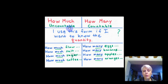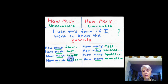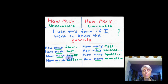For uncountable nouns, to ask a question I say: how much flour have you got? How much salt have you got? How much sugar have you got? How much coffee have you got? Remember, if you use the third person singular pronoun: how much flour has she got? How much salt has he got? How much sugar has she got? How much coffee has he got?